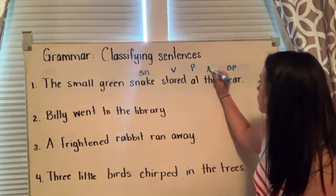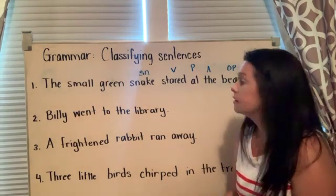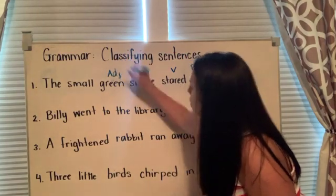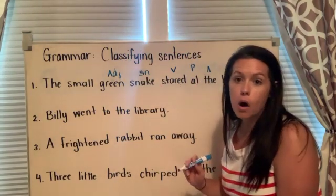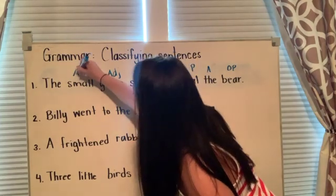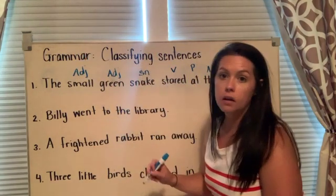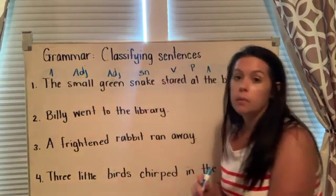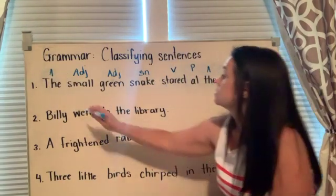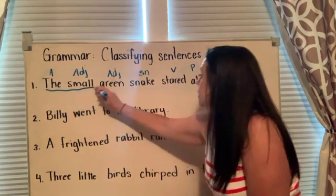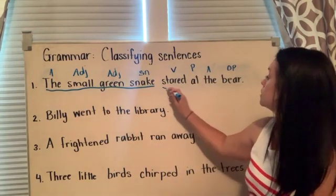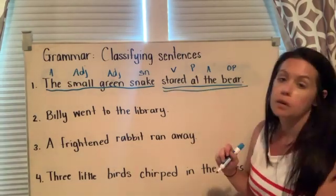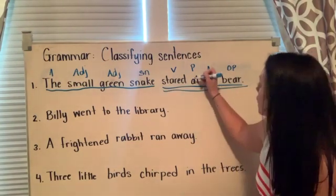The? Article adjective. What kind of snake? Green. Adjective. What kind of snake? Small. Adjective. The? Article adjective. Complete subject: the small green snake. Complete predicate: stared at the bear. Prepositional phrase: at the bear.